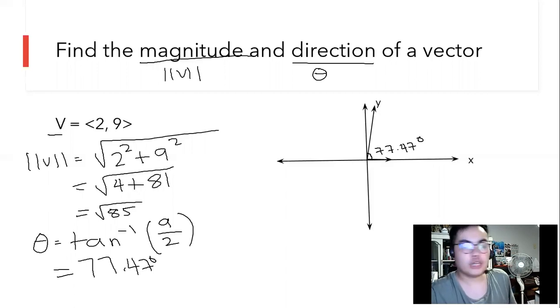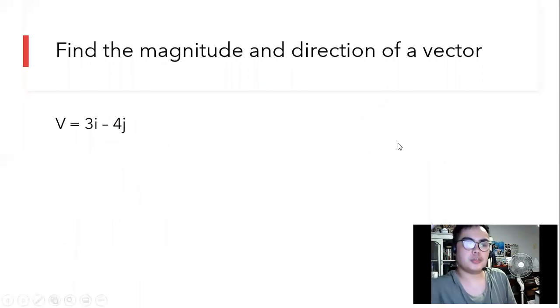We're going to apply this concept in another example. We're going to convert this to the other form. So, 3, then negative 4. What we're going to do is draw first the graphical representation.